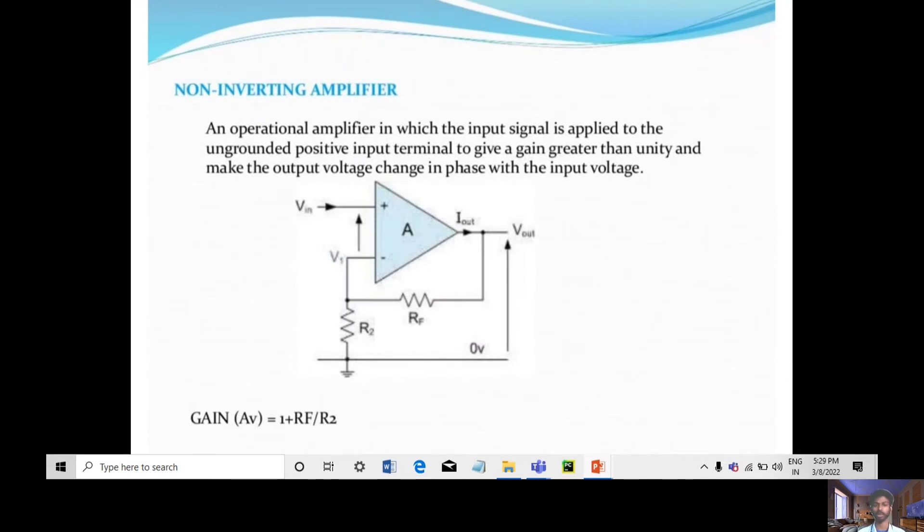In an inverting amplifier, the input signal is applied to the inverting input terminal with the positive input grounded. Keeping the gain greater than unity makes the output voltage change with the input voltage.